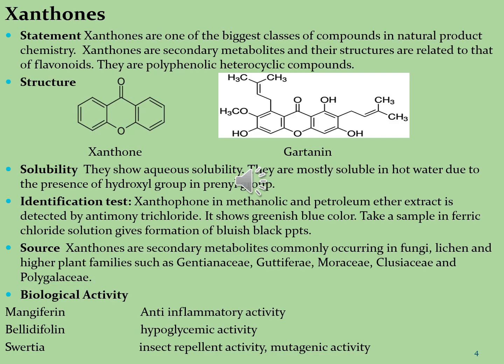Xanthone is found in different families of plants including Bontiaceae, Clusiaceae, Podostemaceae and others. They are also found in some species of the genus Iris. Some xanthones are found in the pericarp of the mangosteen fruit, Garcinia mangostana, as well as in the bark of different plants. Xanthones are used as antioxidant, anti-tumor, anti-allergic, anti-inflammatory, antibacterial, antifungal and antiviral activities.